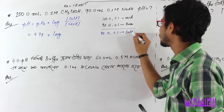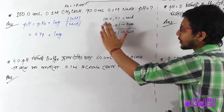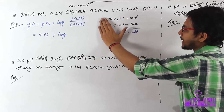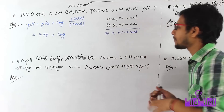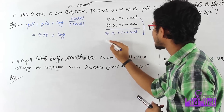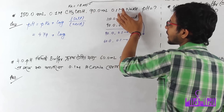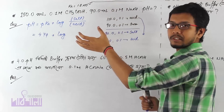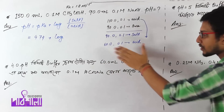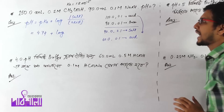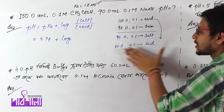Definitely the same molarity, 0.1 molar, because the molarity is the same. When we add 90 ml of base and there is 150 ml of acid, we have a little bit of excess acid remaining — 60 ml. The salt is 0.1 molar and the excess acid is 60 ml, which is 0.1 molar acid. So the acetic acid and salt form a buffer.